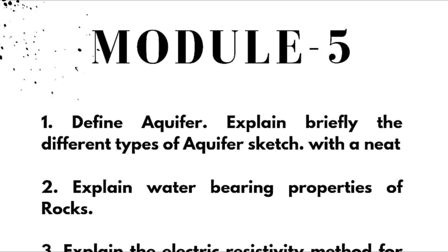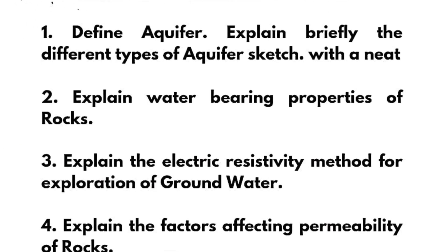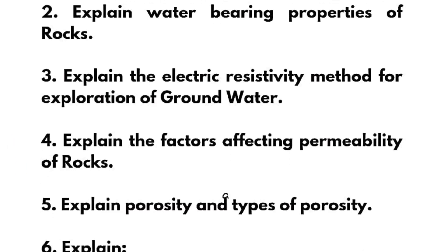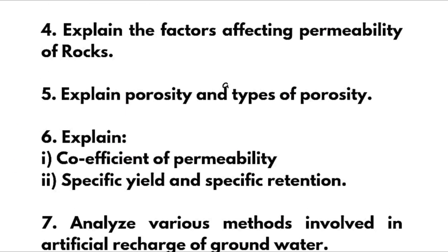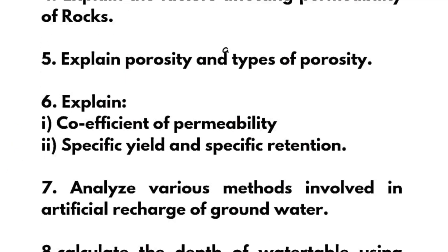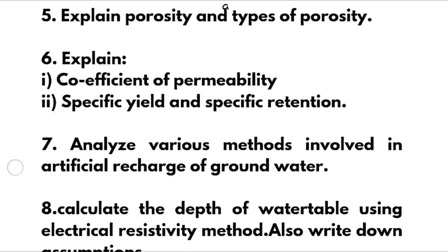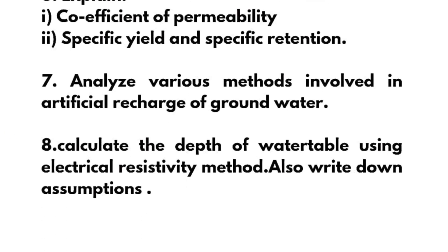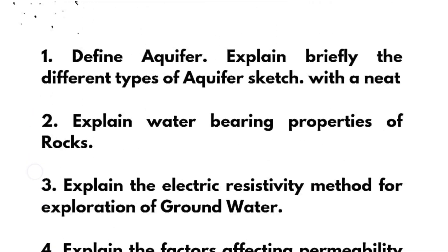Module Five: define aquifer and explain briefly the different types of aquifer with neat sketches. Explain water-bearing properties of rocks. Explain the electrical resistivity method for exploration of groundwater. Explain the factors affecting permeability of rocks. Explain porosity and types of porosity. Explain coefficient of permeability, specific yield, and specific retention. Analyze various methods involving artificial recharge of groundwater. Calculate the depth of water table using the electrical resistivity method, and write down assumptions.